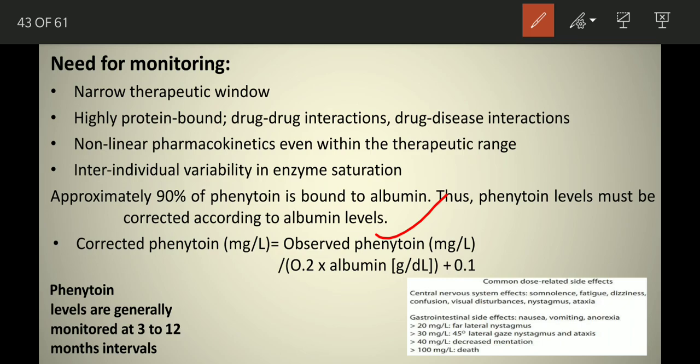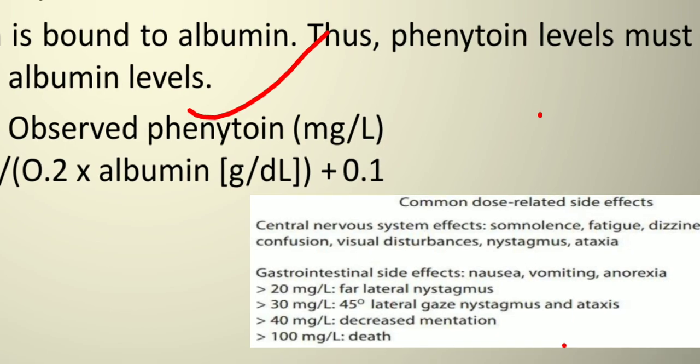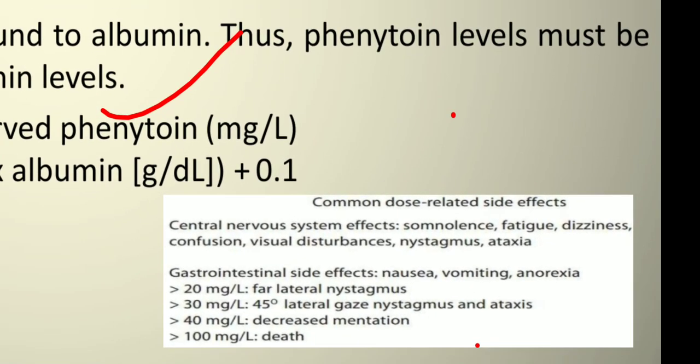Phenytoin levels are generally monitored at 3 to 12 month intervals. Common dose-related side effects primarily affect the central nervous system — including nystagmus, which is an involuntary eye movement causing rapid movement from side to side or up and down, as well as fatigue, dizziness, confusion, and visual disturbance.